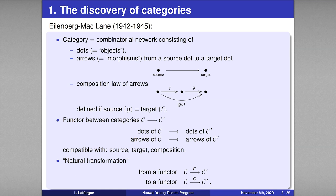Categories were invented during the Second World War by two mathematicians: Samuel Eilenberg, who had escaped from Poland, and Saunders Mac Lane, who was an American mathematician. I only want to say that a category is a kind of combinatorial object which can be partly seen as a picture.